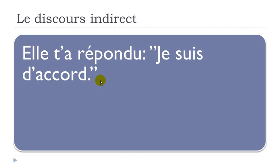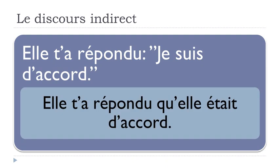Just follow the rule: if the verb introducteur is at the past and the second verb is at the present, put the second verb at the imparfait. Don't think too much about why — just put it at the imparfait. You get: elle t'a répondu qu'elle était d'accord. The first part doesn't change, but the present form je suis becomes imparfait elle était.